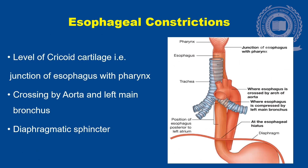It is very important to know the esophageal constrictions. There are three constrictions: one is at the level of the cricoid cartilage, at the junction of the esophagus with the pharynx; the second one is at the crossing by the aorta and left main bronchus; and the third one is at the diaphragmatic sphincter level.